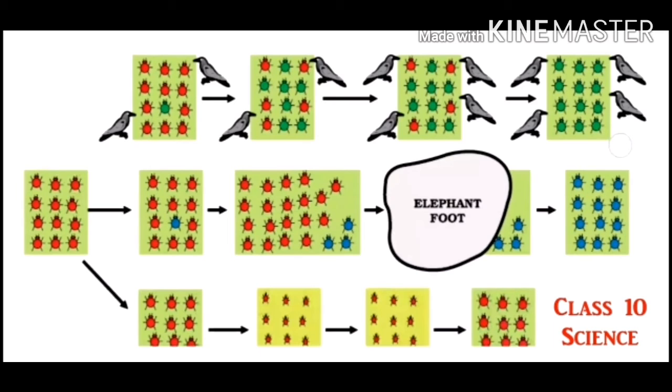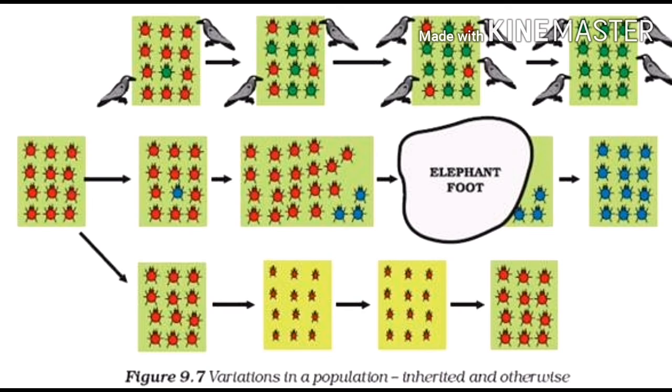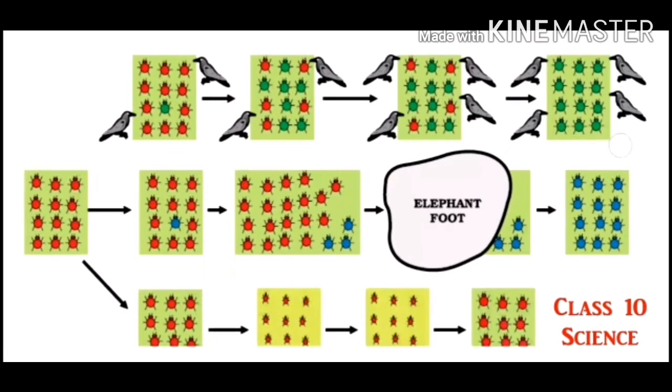Even a non-advantageous character can become fixed. This is called chance fixation or genetic drift. The change in the frequency of some genes in a population which provides diversity without any survival advantage is called genetic drift.